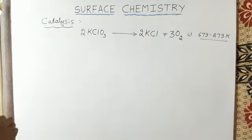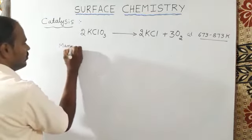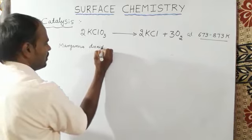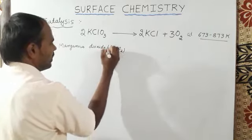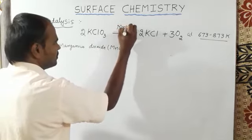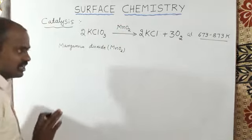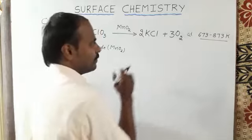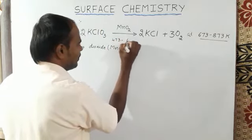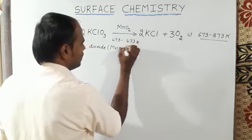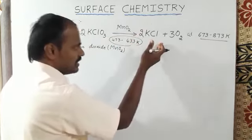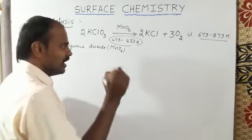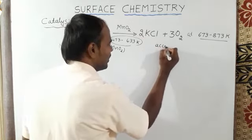When a small amount of manganese dioxide, MnO2, is added in this reaction, the chemical reaction takes place at a lower temperature: 473 Kelvin to 633 Kelvin, and it also accelerates the chemical reaction.